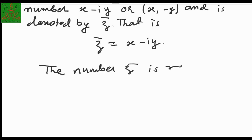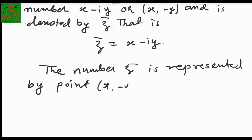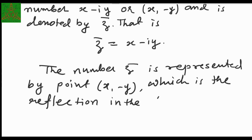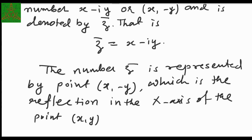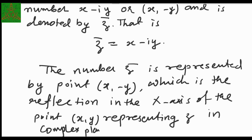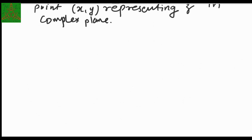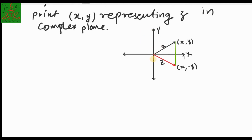The number z̄ is represented by the point (x, −y), which is the reflection of (x, y) in the x-axis. In the complex plane — also called the Argand diagram, xy-plane, or z-plane — if z is a vector to (x, y), then z̄ is the red vector to (x, −y), which is the reflection of that vector with respect to the real line.